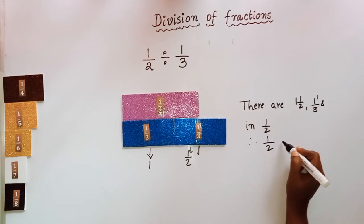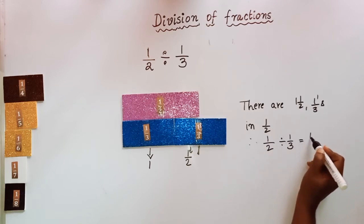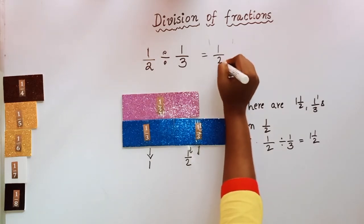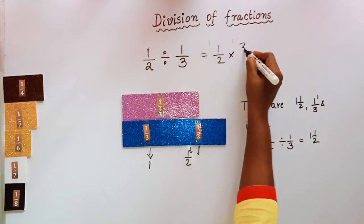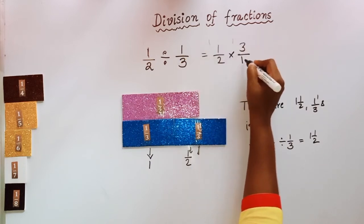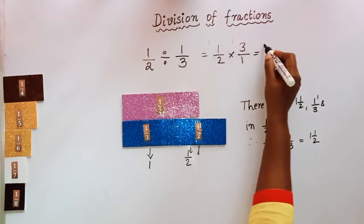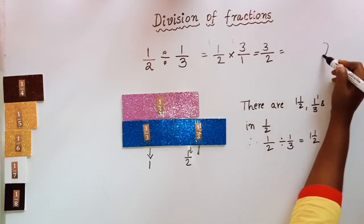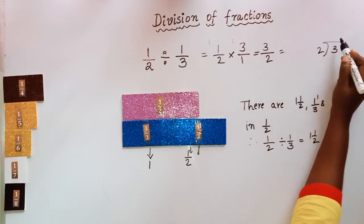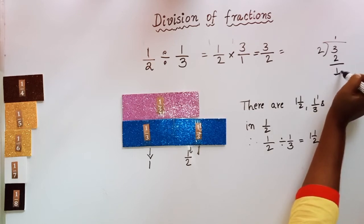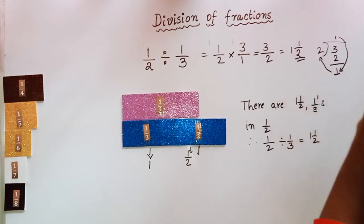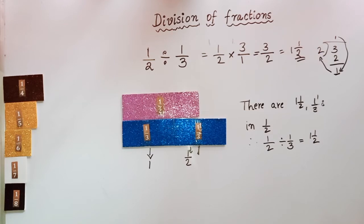So 1/2 divided by 1/3 is equal to 1 and a half. Let us verify: 1/2 × 3/1 — interchange the numerator and denominator of the second fraction — equals 3/2. Changing this improper fraction to a mixed fraction gives 1 and 1/2. So 1/2 divided by 1/3 is equal to 1½ or 3/2.